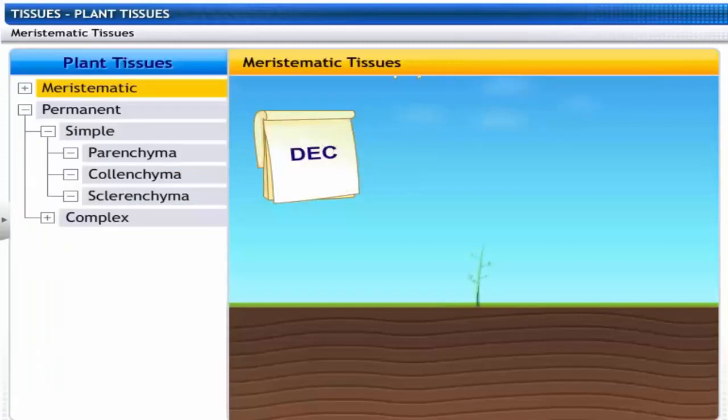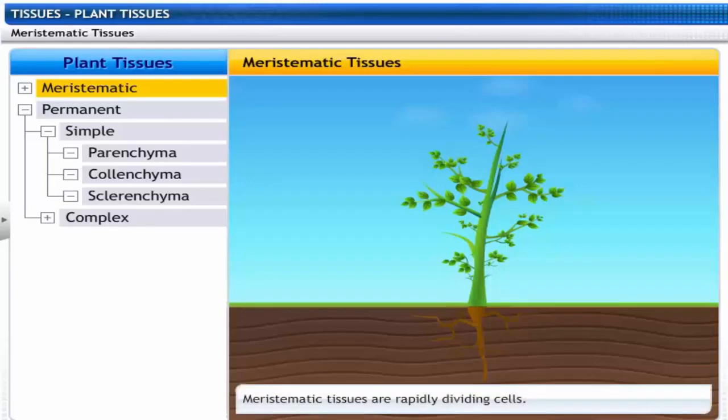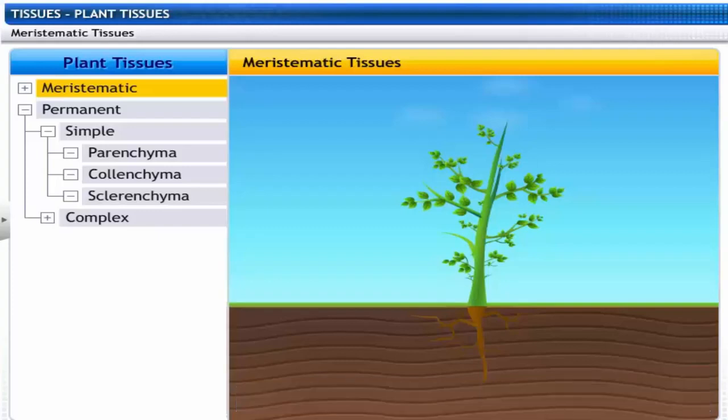Look at how this plant is growing month by month. This is due to a special type of tissue called meristematic tissue. These tissues are rapidly dividing tissues.